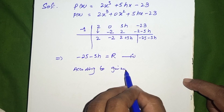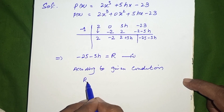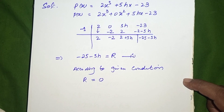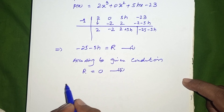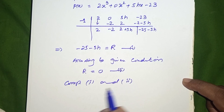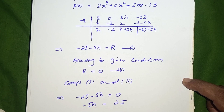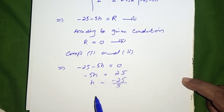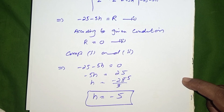The remainder from this polynomial is -25 - 5H (equation 1). According to the given condition, -1 is the zero of the polynomial, so the remainder = 0 (equation 2). Comparing both: -25 - 5H = 0, so -5H = 25, and H = -25/5 = -5. Therefore the value of H is -5.